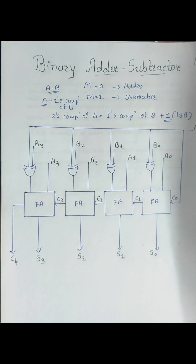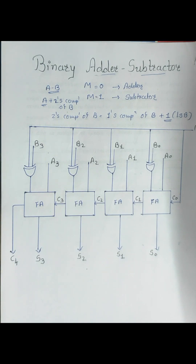If you want to create a simple binary subtractor circuit, you can take full adders and at the input of B, just add an inverter — a NOT gate — so you get B dash. And the initial carry, instead of 0, give it as 1. That is the basic logic for creating a subtractor.